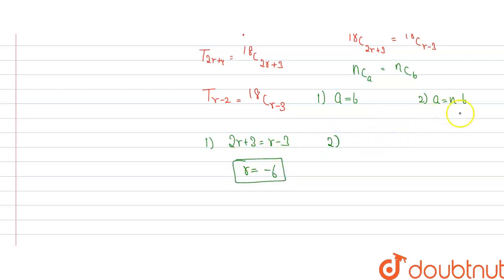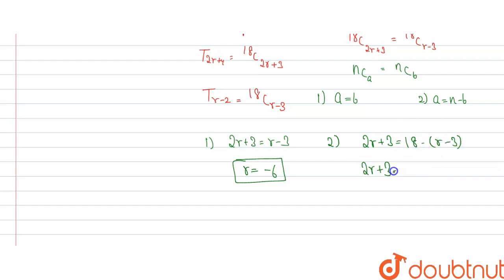In the second case, where A equals N minus B, we get 2R+3 equals 18 minus (R-3), which gives us 2R+3 equals 18-R+3, so 2R+3 equals 21-R. The 3s cancel and we get 3R equals 18, so the value of R becomes equal to 6.